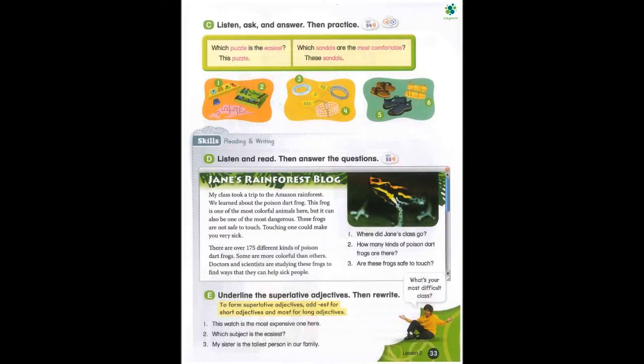Page 33, Skills: Reading and Writing. D. Listen and read, then answer the questions. Jane's Rainforest Blog. My class took a trip to the Amazon rainforest. We learned about the poison dart frog. This frog is one of the most colorful animals here but it can also be one of the most dangerous. These frogs are not safe to touch. Touching one could make you very sick. There are over 175 different kinds of poison dart frogs. Some are more colorful than others. Doctors and scientists are studying these frogs to find ways that they can help sick people.